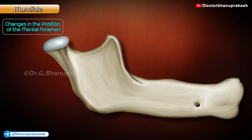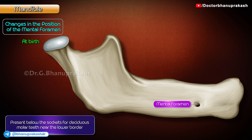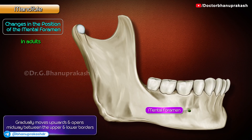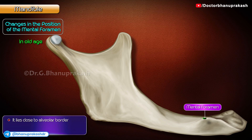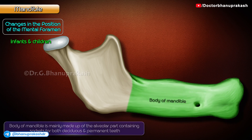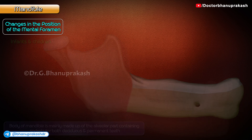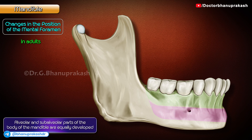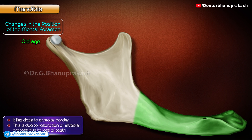Changes in the position of the mental foramen with age. At birth, it is present below the sockets for the deciduous molar teeth near the lower border. In adults, it gradually moves upwards and opens midway between the upper and lower borders. In old age, it lies close to the alveolar border, due to resorption of the alveolar process following loss of teeth. In infants and children, the body of the mandible is mainly made up of the alveolar part containing sockets for both deciduous and permanent teeth. In adults, the alveolar and sub-alveolar parts of the body are equally developed. In old age, teeth usually fall out and the alveolar border is absorbed, so the height of the body is markedly reduced.